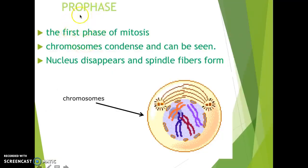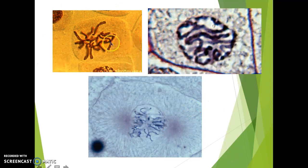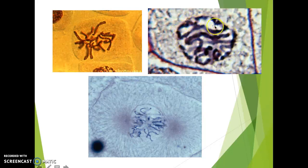The first phase is prophase, the very first phase of mitosis. The chromosomes condense and can actually be seen — you'll see the actual X shapes forming in the center of the cell. The nucleus disappears and the spindle fibers form from the centrioles, which start moving to either side of the cell. In real microscope pictures, you can barely see the nucleus around the cell, but you can see that the chromosomes are taking their shape.